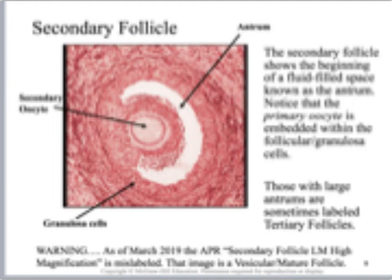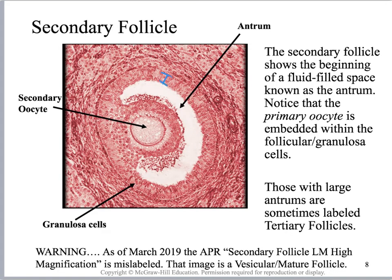Here we are looking at a secondary follicle. If we had these all lined up, you would see that this is quite a bit larger. Here you can see the stratified cuboidal with lots and lots of cells — about ten to twelve rows of cells. You can see the development of the antrum, which is still fairly small, helping you identify this as a secondary follicle. You can see the corona radiata right here with the granulosa cells all surrounding it. And you can see the primary oocyte right there — that should say primary; I need to fix that label.